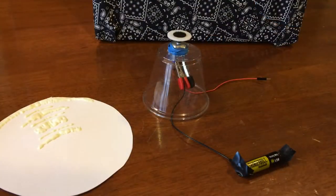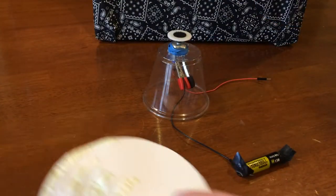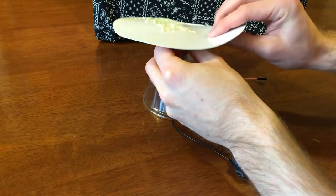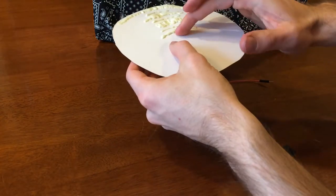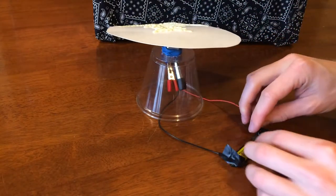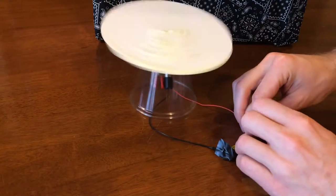After that, you can connect it to the battery. Okay, let's switch to normal speed and put it all together. Attach the poster board to the gear. Then connect the wires to the battery. I've used electrical tape to secure the wires.